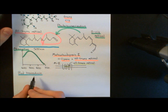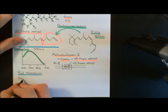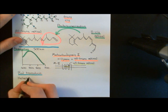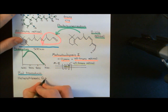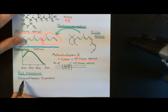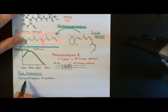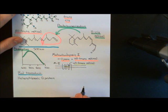Rod transducin is a heterotrimeric G-protein. A heterotrimeric G-protein is made up of three separate proteins — trimeric means three-membered, hetero means different. It is made up of an alpha subunit, a beta subunit, and a gamma subunit.